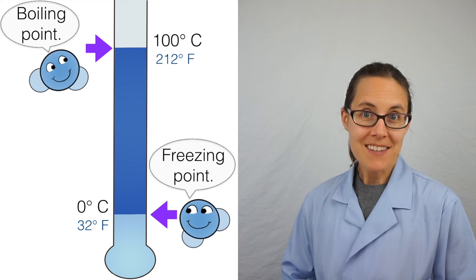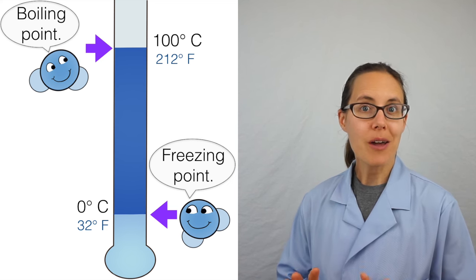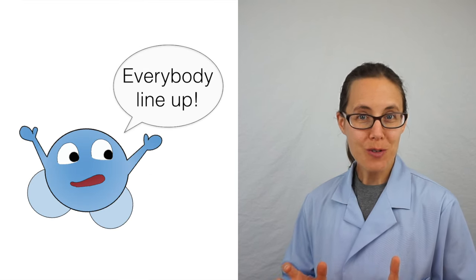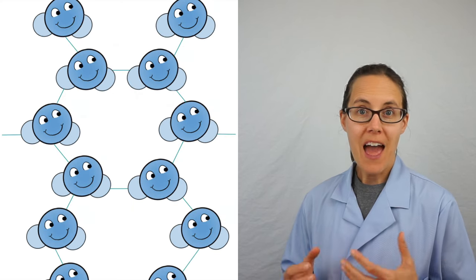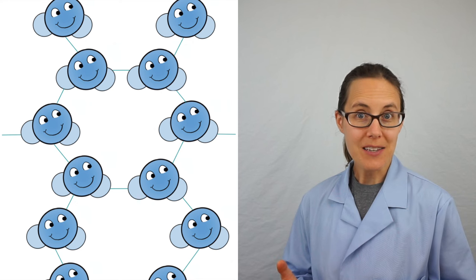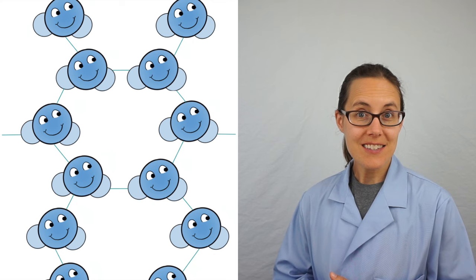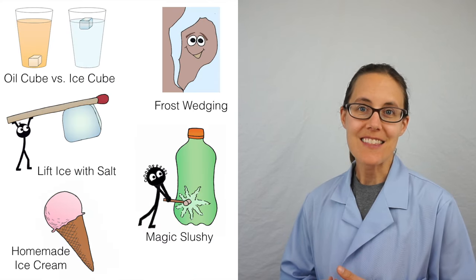When water freezes, something incredible happens. The molecules slow down and they become organized. Everybody line up! A beautiful lattice structure forms, and to create this pattern the molecules need to spread out. And this is why water expands when it freezes. It's why ice floats. It's why snowflakes are six-sided. And it's what allows us to do the five investigations in this video.